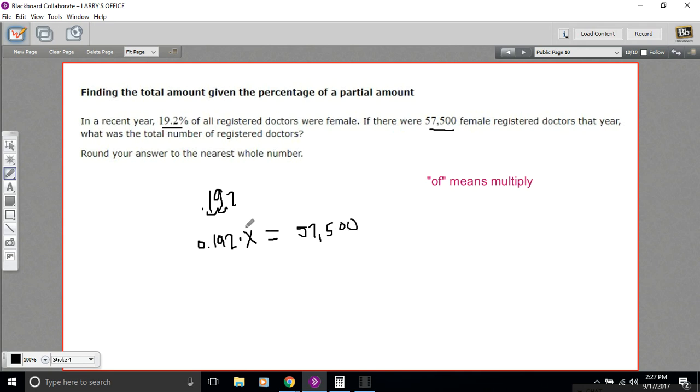So now to find the total number of doctors, all I have to do is solve for X. Right now, X is being multiplied by 0.192, so I have to undo that by doing the opposite. I have to divide by 0.192. And of course I have to do that to both sides of the equal sign because that's what the rules of algebra say.